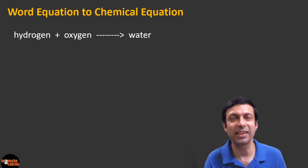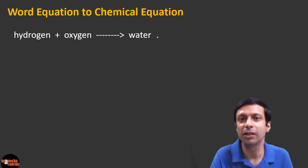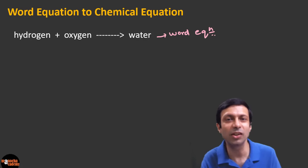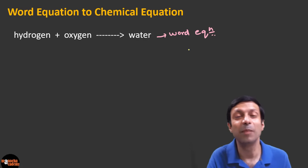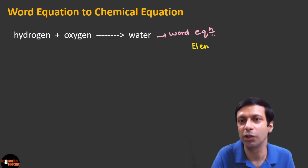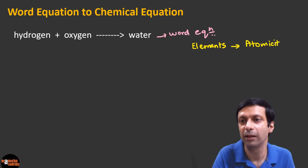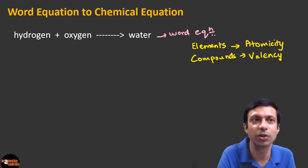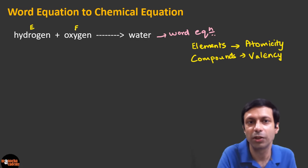When we write a chemical reaction like hydrogen plus oxygen gives water, this is known as a word equation because it's expressed in words. Now we're going to learn how to convert this into a chemical equation. The important rule is: for elements in the equation, we use atomicity, and for compounds in the equation, we use valency. So hydrogen is an element, oxygen is an element, and water is the compound. When expressing hydrogen, we don't just write H — we use the symbol with atomicity. One molecule of hydrogen is H₂ because the atomicity is 2.